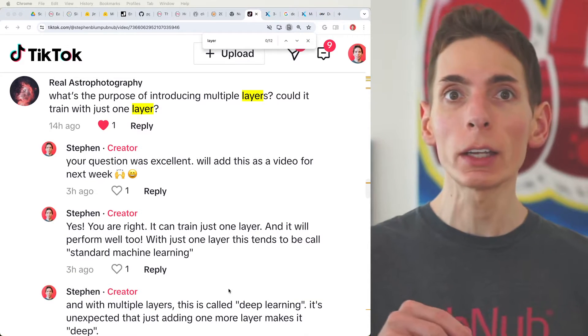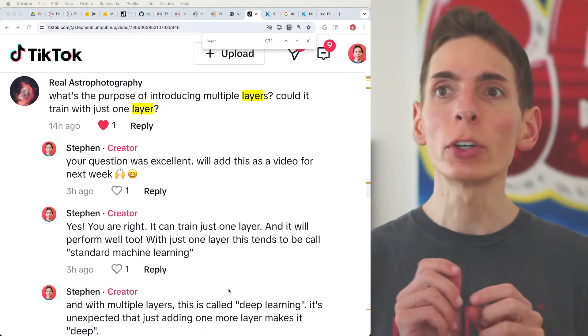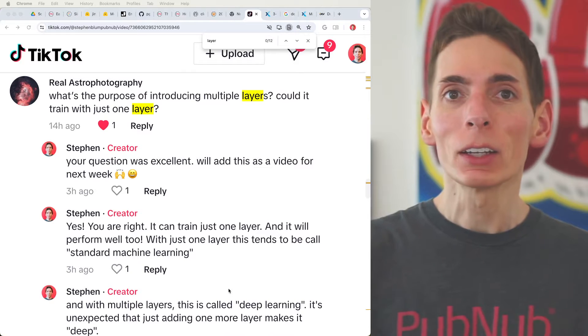RealAsterPhotography asks, what is the purpose of introducing multiple layers in the machine learning context? Say, for example, could you train it with just one layer?